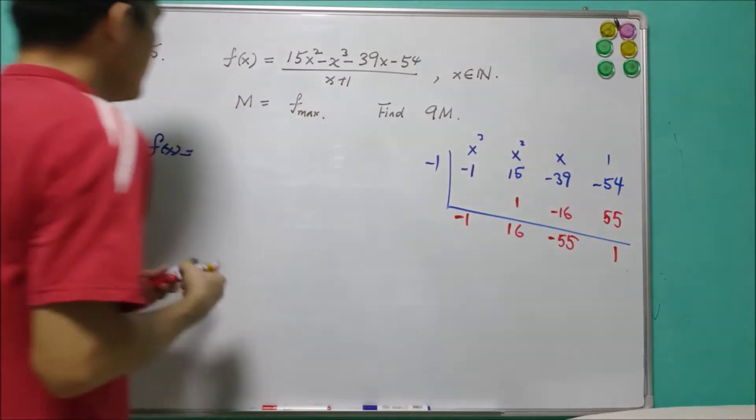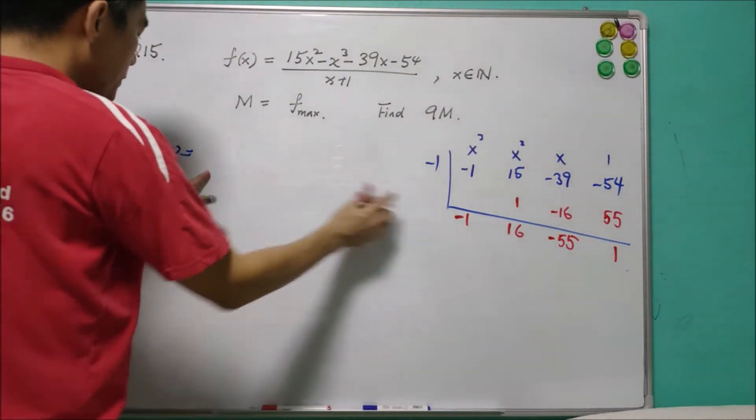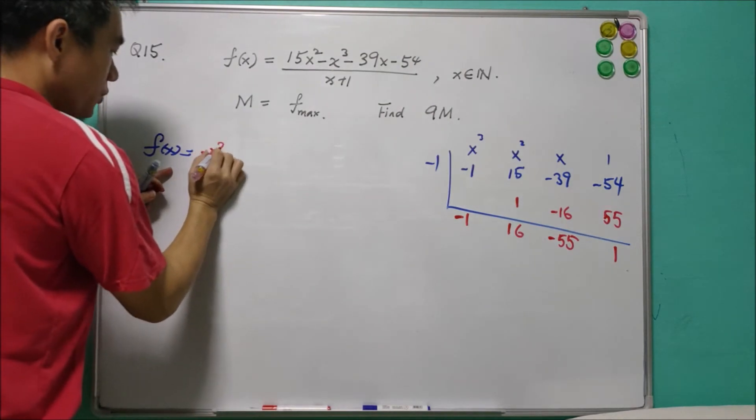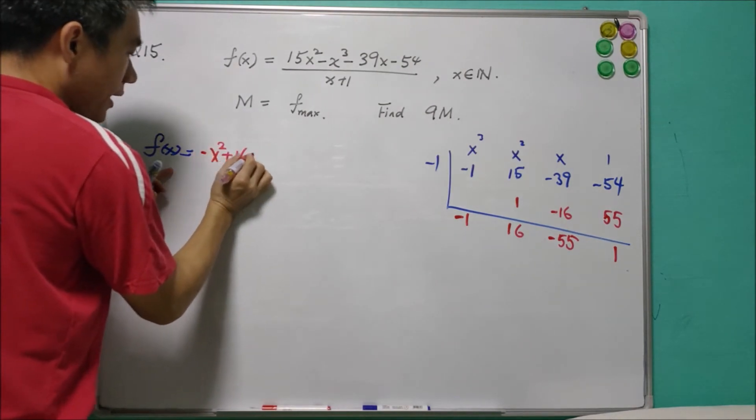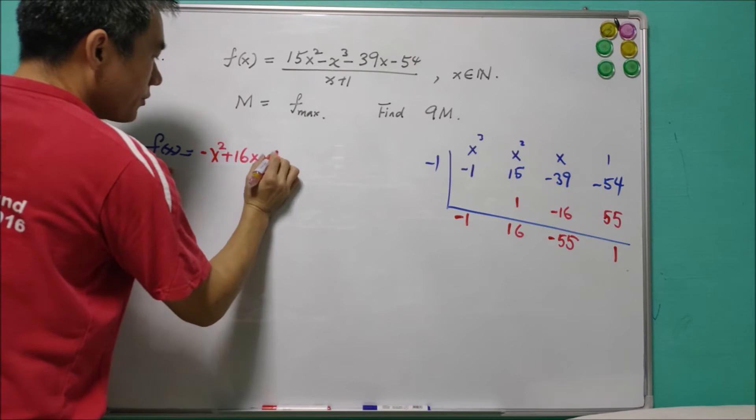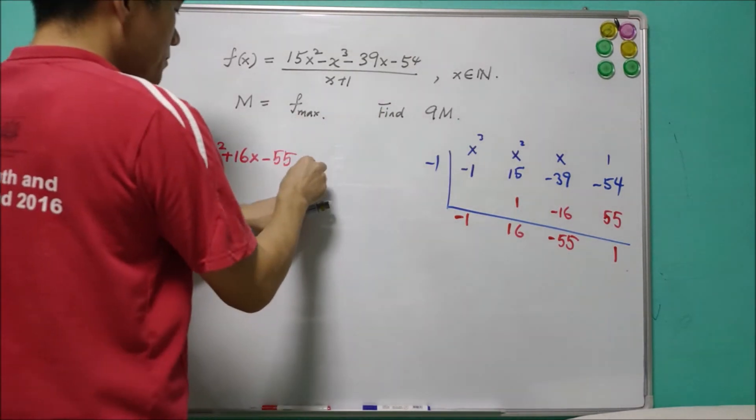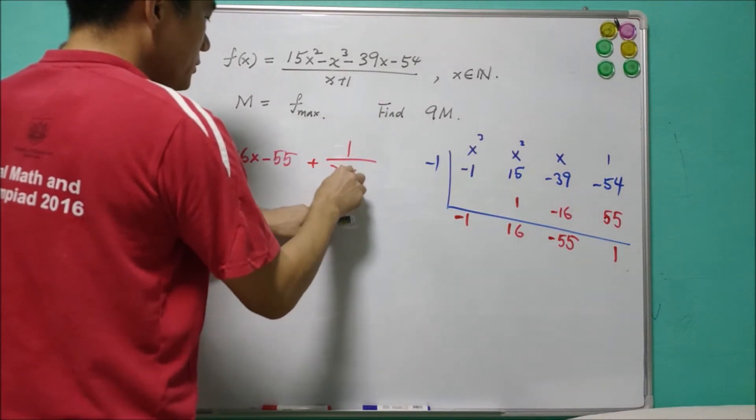So after you have this, we can say that f is equal to negative x squared plus 16x minus 55, and plus 1 over x plus 1.